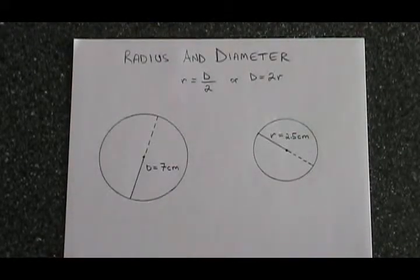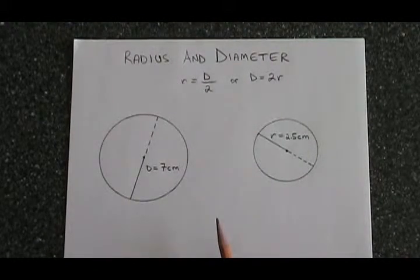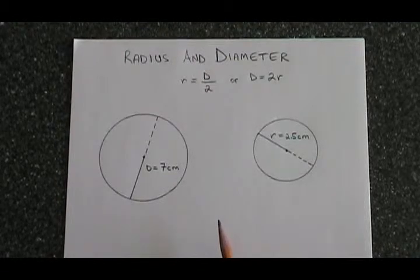For many problems that involve a circle, like when we're calculating the area or the circumference of a circle, we need to know the radius.